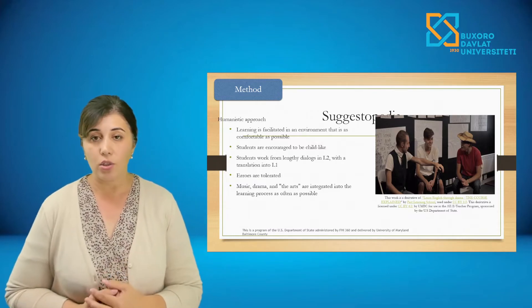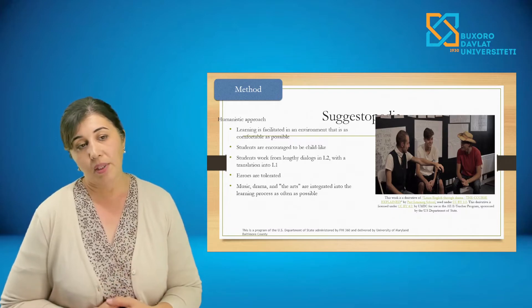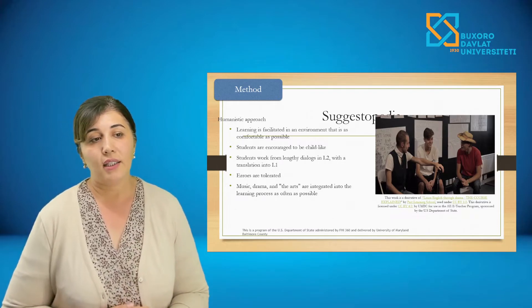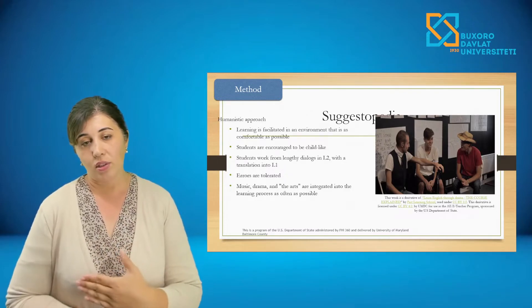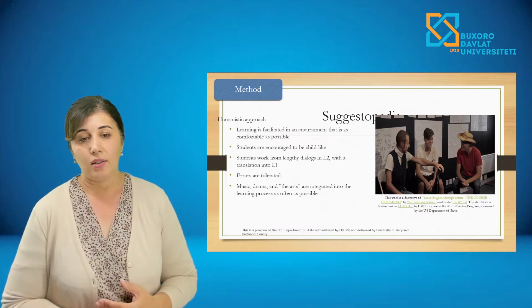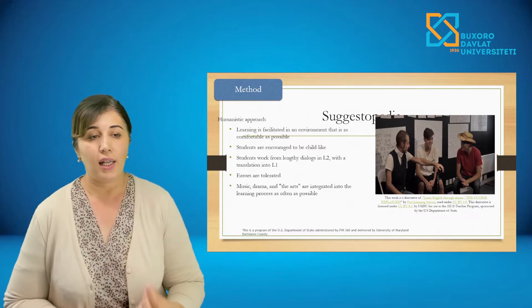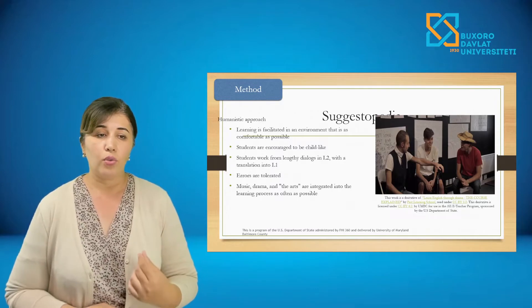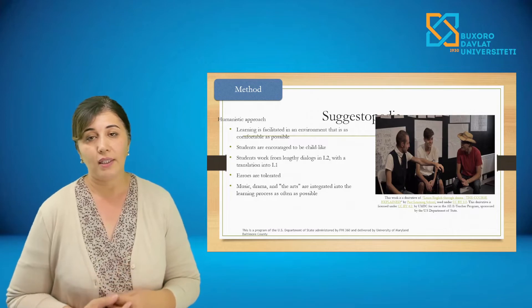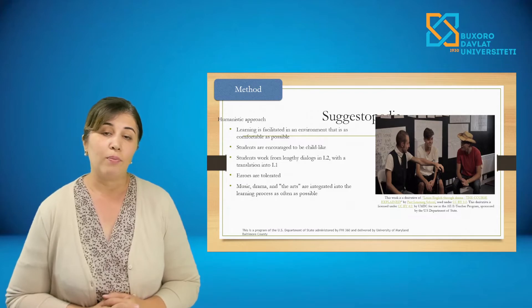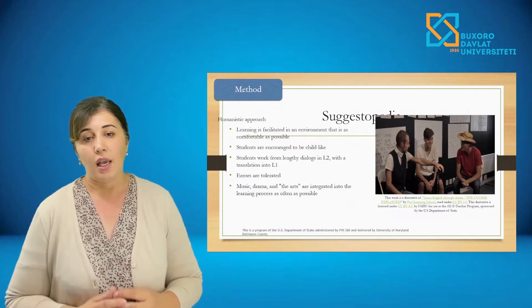The next method is Suggestopedia, also a type of humanistic approach. Its main feature is that learning is facilitated in an environment that is as comfortable as possible — learners may not sit at desks in rows but can sit in a circle and feel as free as they can. Students are encouraged to be childlike. You can work from dialogues and use L2 with translation into L1. Errors are tolerated. One feature of this method is also the use of music, drama, and the arts — photos and pictures — integrated into the learning process as often as possible.